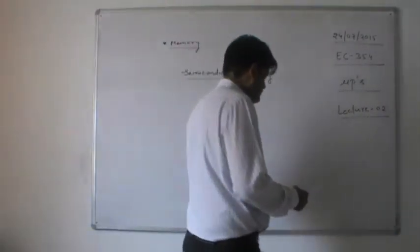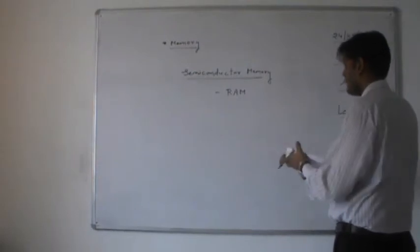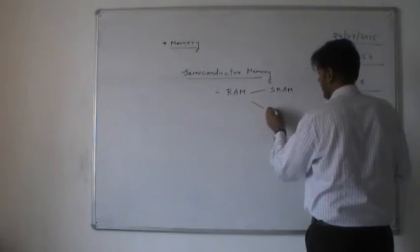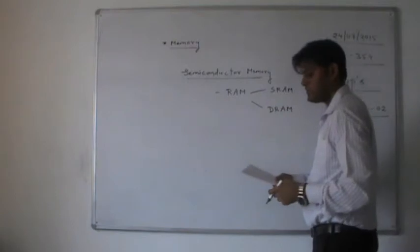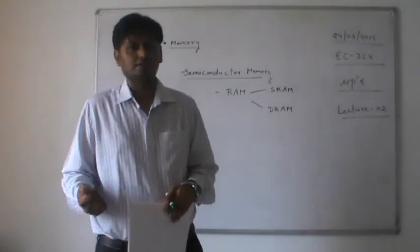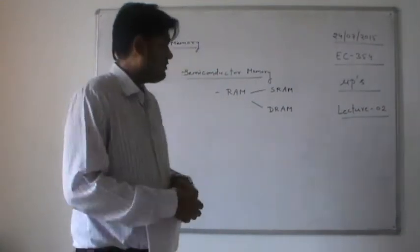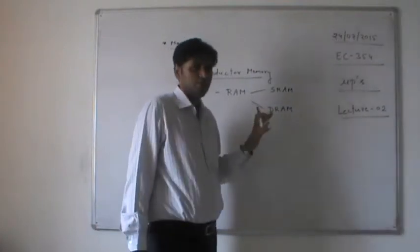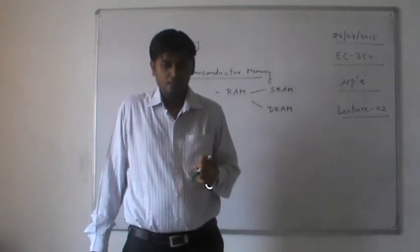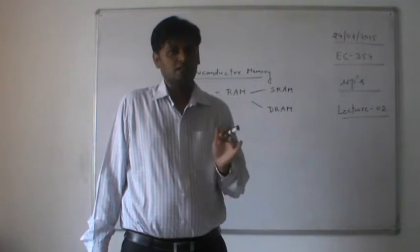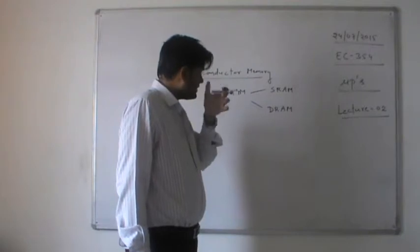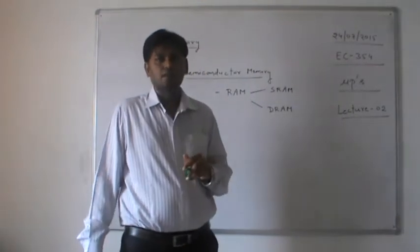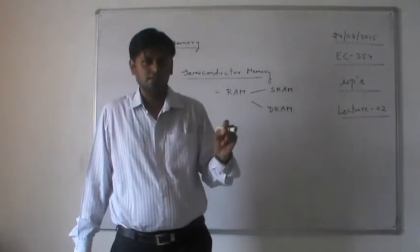Random access memory can be of two types: SRAM (static RAM) and DRAM (dynamic RAM). Both are used for temporary storage of data and their working is the same. The main difference is in construction. In SRAM the packaging density is quite high because one memory cell consists of six transistors.